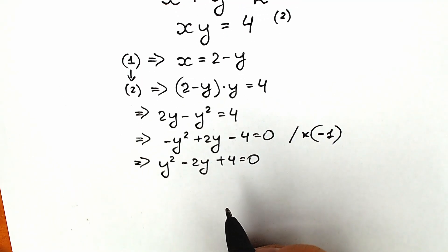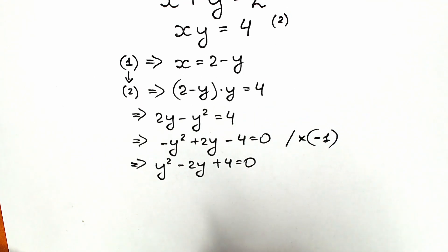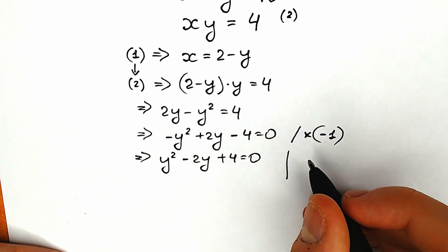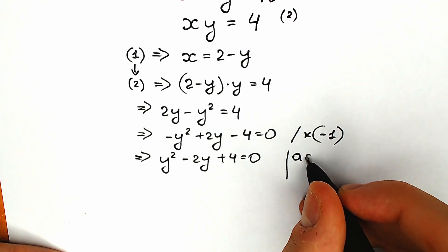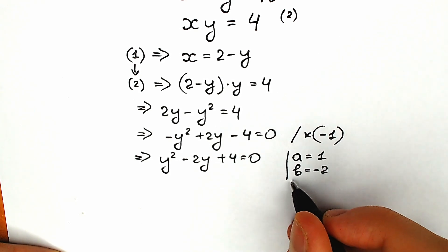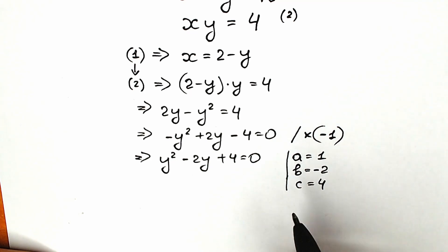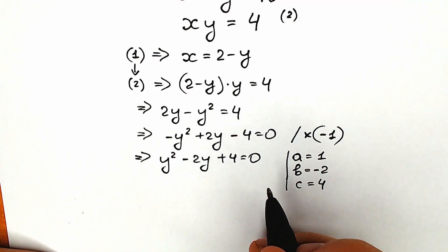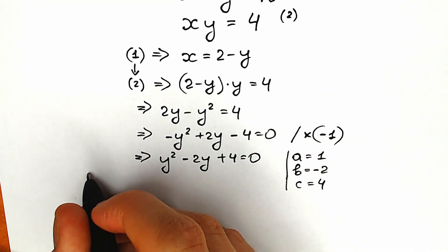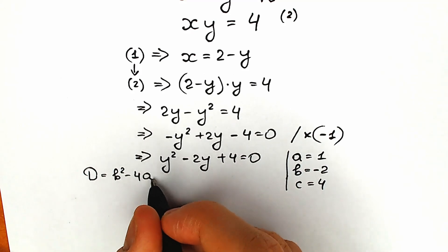This is our quadratic equation and now we're going to solve it using basic knowledge. Let's write our coefficients: a equals 1, b equals minus 2, and c equals 4.